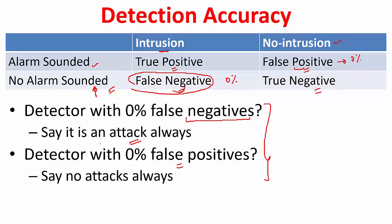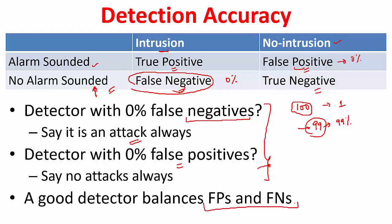But this is not good behavior because there is a cost. For example, in the always-attack case where attacks are very rare — say there are 100 events of which only one is an attack — then 99 times you are saying there is an attack when there is not. So your false positive percentage will be 99 percent, which is not a good thing. The same logic applies in reverse. So a good detector balances false positives and false negatives because both have a cost.